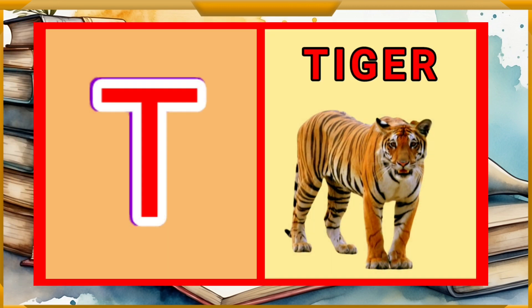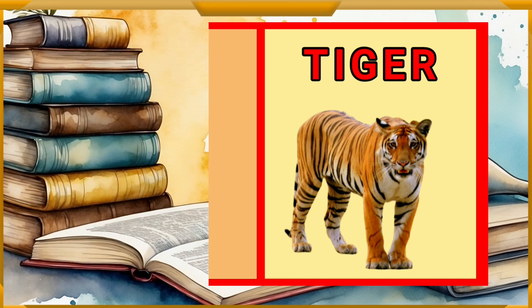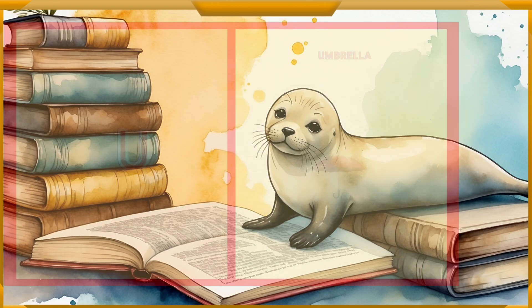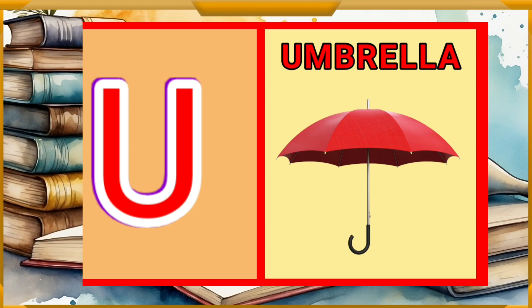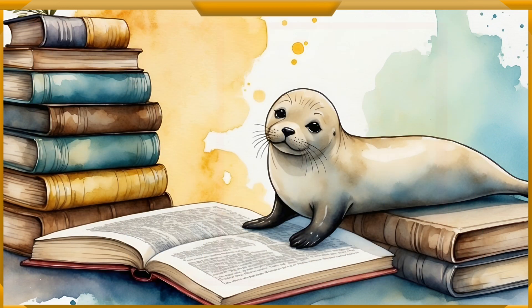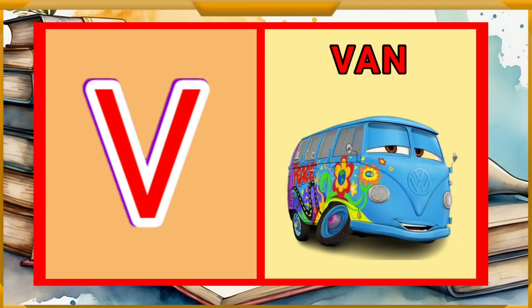T for tiger, U for umbrella, B for bain.